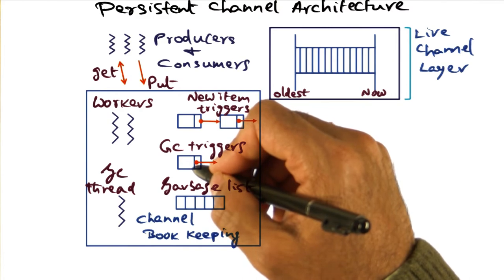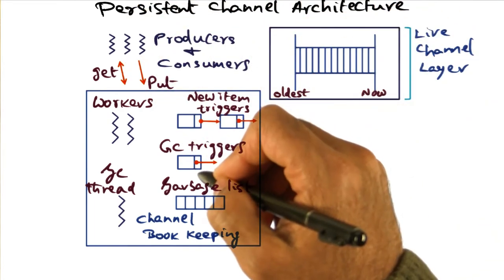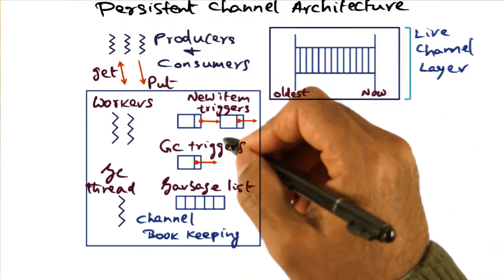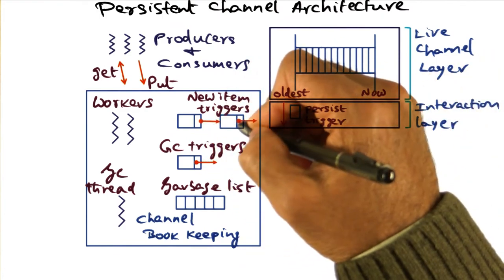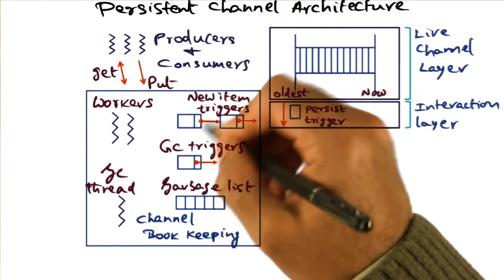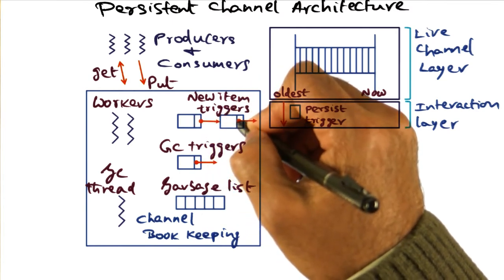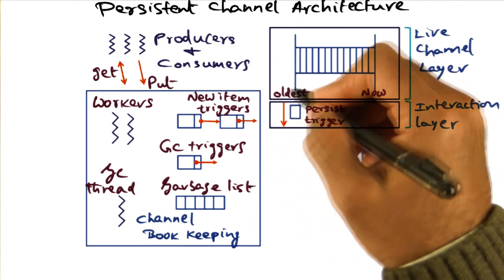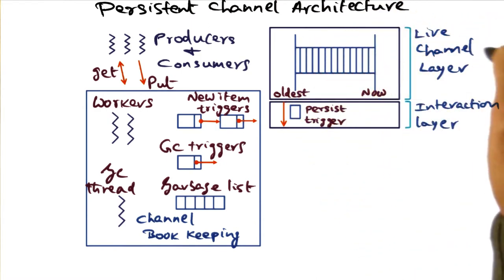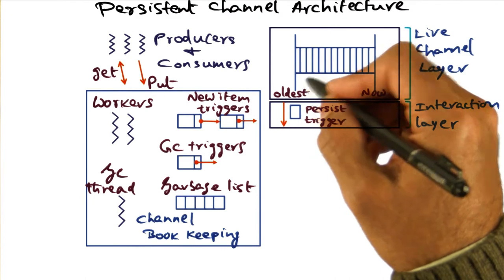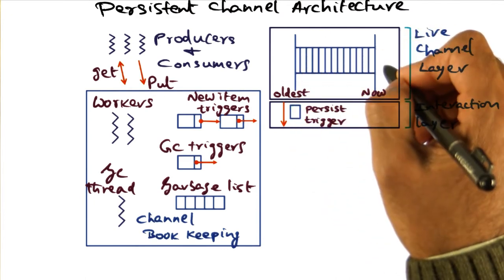One of the features of the PTS architecture is that an application can choose to keep data for as long as it wants. That is the persistence property supported by the PTS runtime system. As properties of the channel, an application programmer could specify that they don't want to throw away old items but want to archive and persist them. If those properties have been associated with the channel, when items go past the window stored in the live channel layer, the live channel layer generates what are called persistent triggers to indicate that some items have become old and need to be persisted.